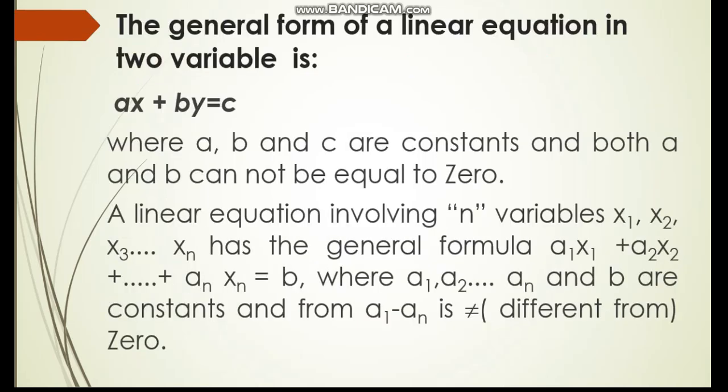The general form of a linear equation in two variables can be expressed in such a way: ax plus by equals to c. Where a, b and c are constant and both a and b cannot be equal to 0 at the same time. Which means, if a and b are equal to 0 at the same time, the final result will become equal to c. And this is mathematically unsound.